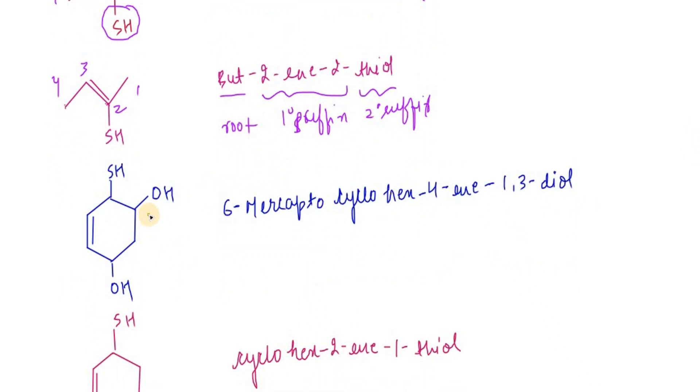This compound, we know that OH has more priority, so 1, 2, 3, 4, 5, 6. So 1,3-diol. These are the principal function groups and 6-mercapto.